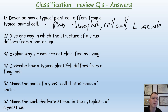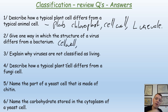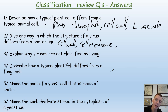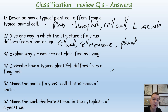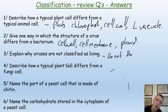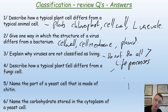One way the structure of a virus differs from a bacterium: bacteria have a cell wall, a cell membrane, and plasmids - whereas viruses do not have a cell wall or cell membrane; viruses only contain a protein coat called a capsid. Viruses are not classified as living things because they do not carry out all seven life processes - for example, they do not respire.